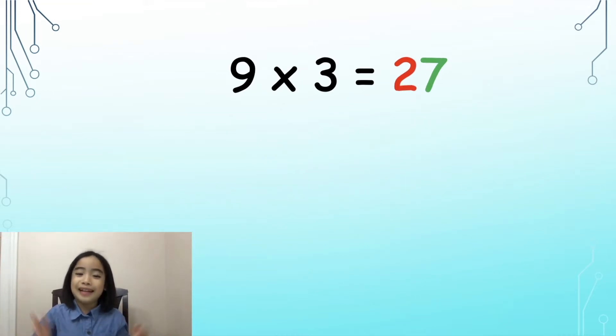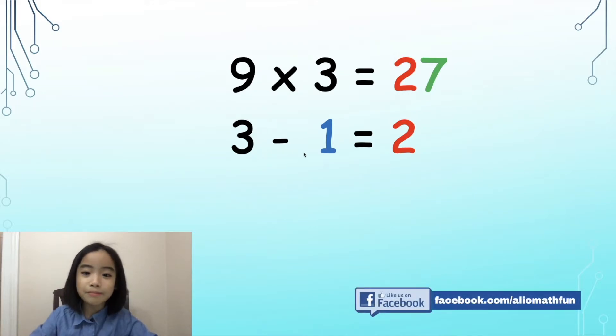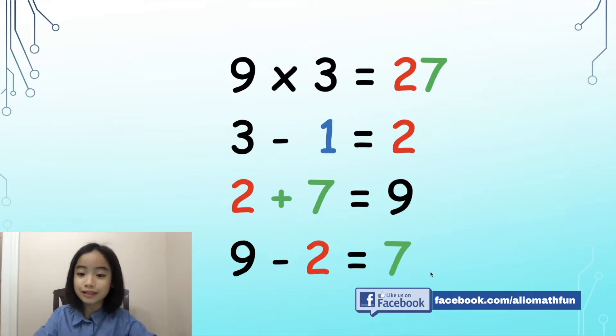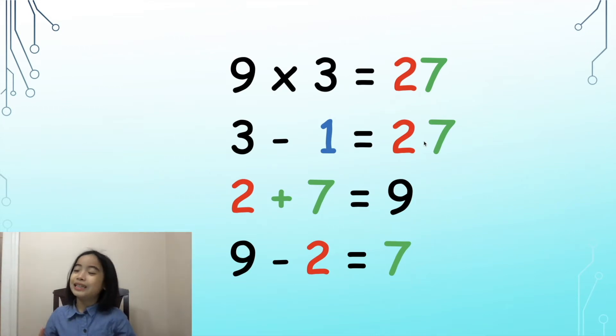We know that 9 times 3 equals 27. Do you pick up any relationship? Oh, I have one. 3 minus 1 equals 2. We put the 2 in the 10s position. 2 plus 7 equals 9. So, 9 minus 2 equals 7. We write the 7 in the 1s position. This is a lot faster. Yahoo!